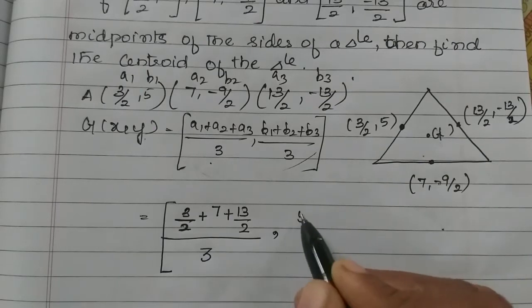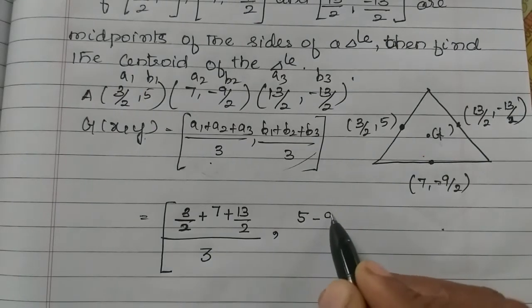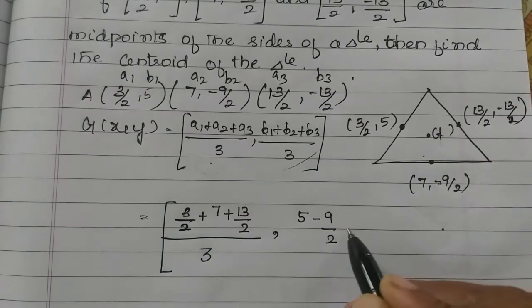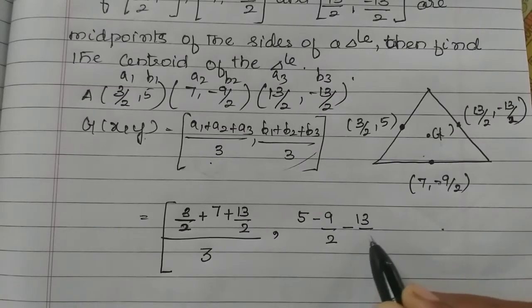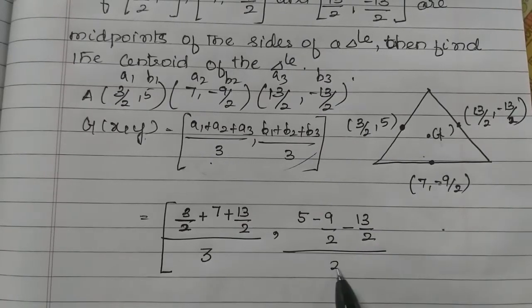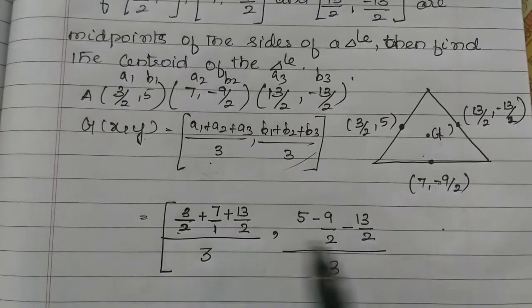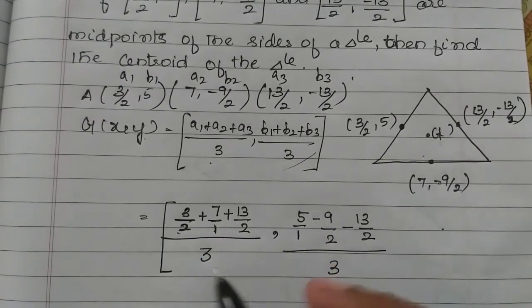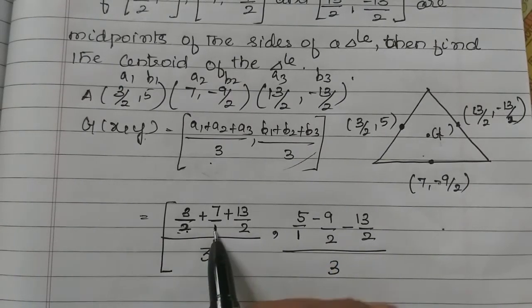b1 plus 5, then b2 plus minus 9/2, then b3 plus minus 13/2 divided by 3. If we change the function by 1, but here the answer is 2.